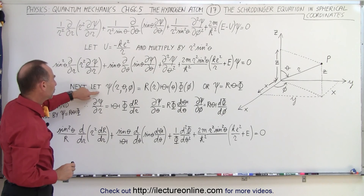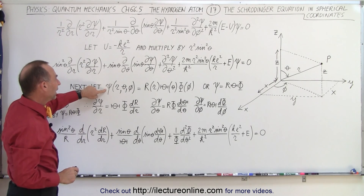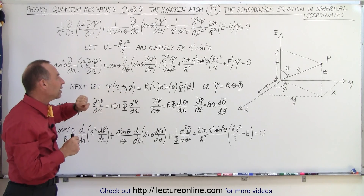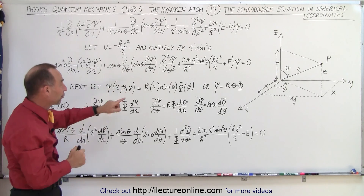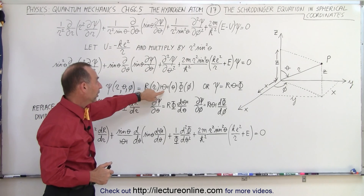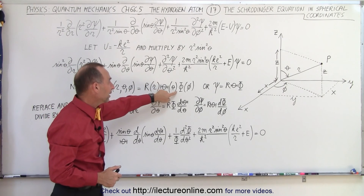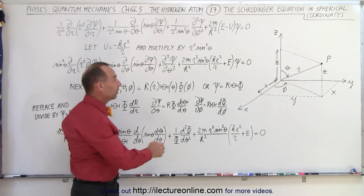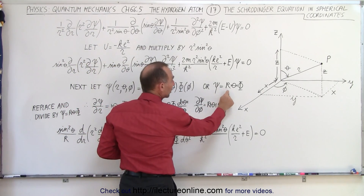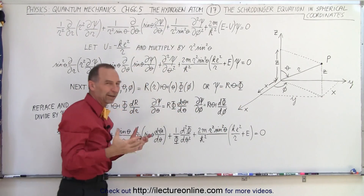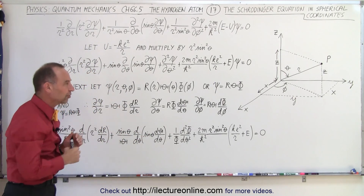The next thing we're going to do is take the Schrödinger equation and instead of writing it as a single equation in terms of r, theta, and phi, we're going to write it as the product of three separate equations — the first one that's only a function of r, the second one that's only a function of theta, and the third one that's only a function of phi. So the wave function simply becomes R(r)·Θ(θ)·Φ(φ).